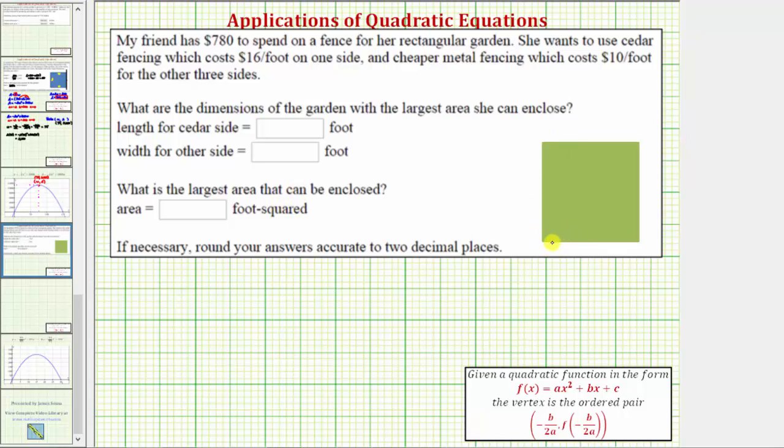Let's use this rectangle to help us set up the problem. We'll label two sides L for length and two sides W for width. One of the sides is going to cost $16 per foot. The other three sides will cost $10 per foot. Let's let the length of this side here be where the fence costs $16 per foot.